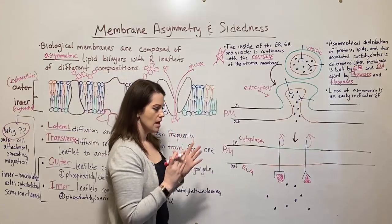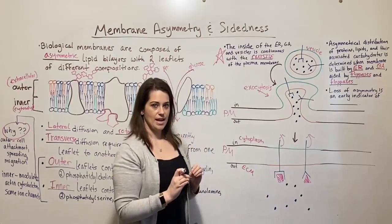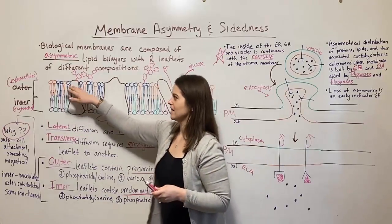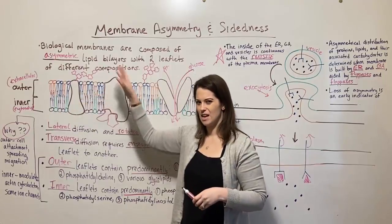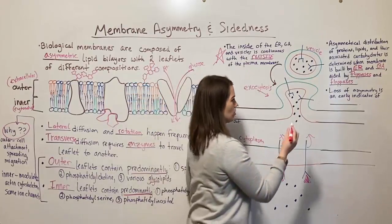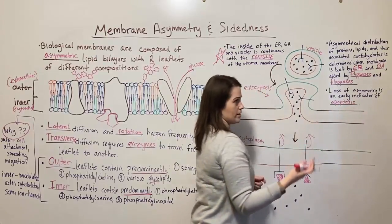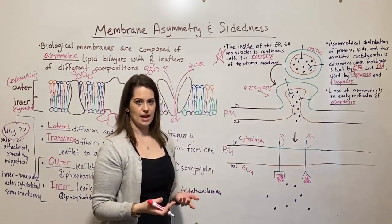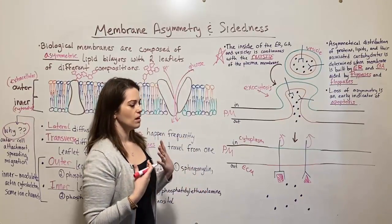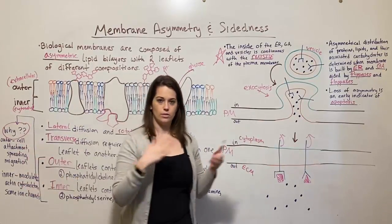This asymmetry is very important. Cells work hard to build the asymmetry in the first place and then to maintain it. Loss of asymmetry — if you see a cell that no longer has a distinct outer leaflet and a distinct inner leaflet, but instead has roughly the same ratios of different phospholipids in both leaflets — is actually an early indicator of apoptosis, or programmed cell death. That is an unhealthy cell beginning apoptosis, getting ready to self-destruct, no longer putting energy into maintaining membrane asymmetry to carry out the functions those different leaflets perform.